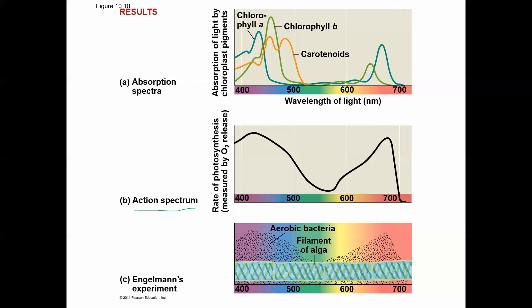Engelmann's experiment used aerobic bacteria before the invention of the spectrophotometer, along with a prism and a piece of photosynthesizing algae, to deduce the action spectrum of photosynthesis using the patterns of aggregation of these bacteria on the slide.